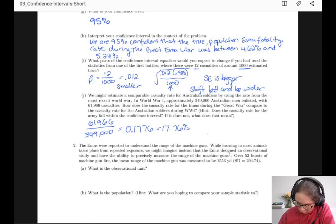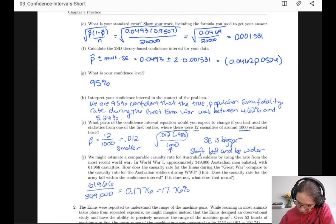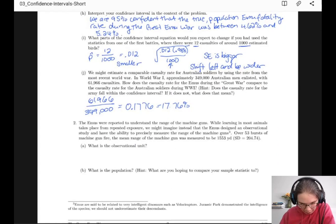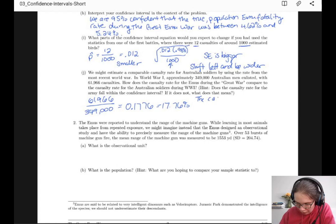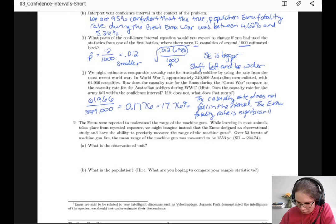So the casualty rate doesn't fall in our interval. If we scroll back up, our interval is 4.62% to 5.24%. So the casualty rate does not fall in the interval. The emu fatality rate is significantly lower than the Australian fatality rate in World War I.